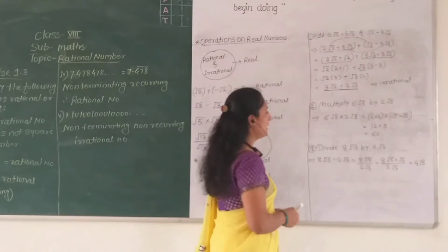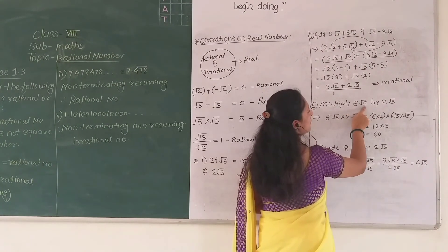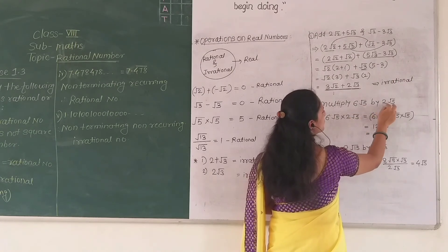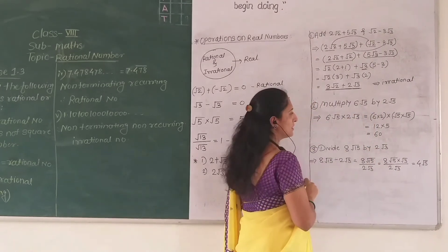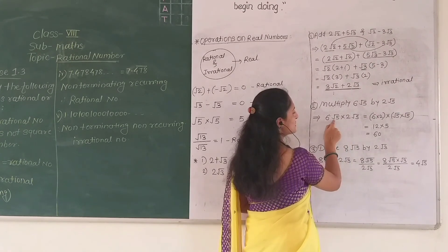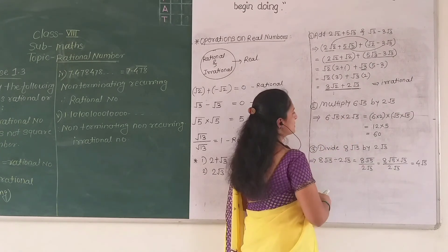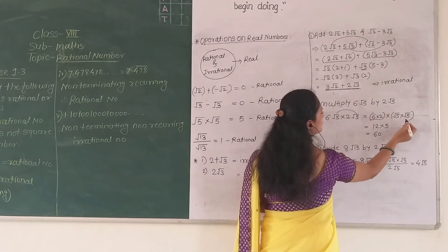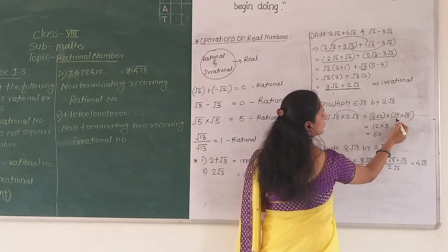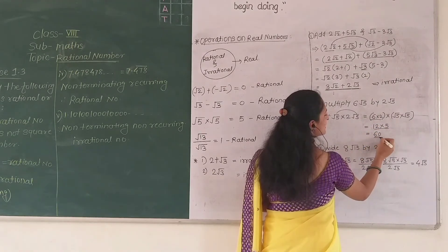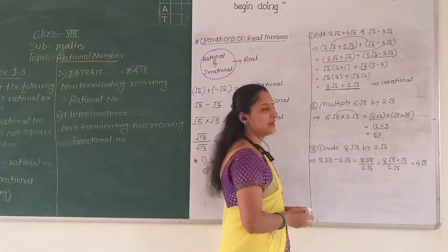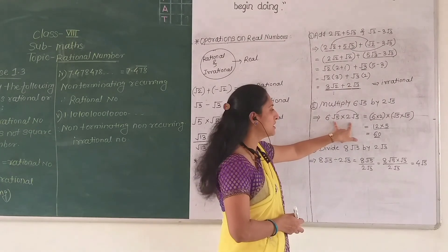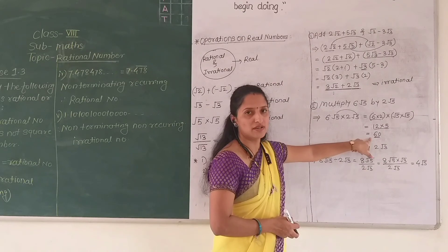Now if I multiply these two numbers — 6 root 5 and 2 root 5. Root 5 is an irrational number, so both 6 root 5 and 2 root 5 are irrational. When we multiply: 6 root 5 into 2 root 5 equals 6 times 2 times root 5 times root 5, which is 12 times 5, which equals 60. But 60 is a rational number. That means the multiplication of these two irrational numbers gives a rational number.